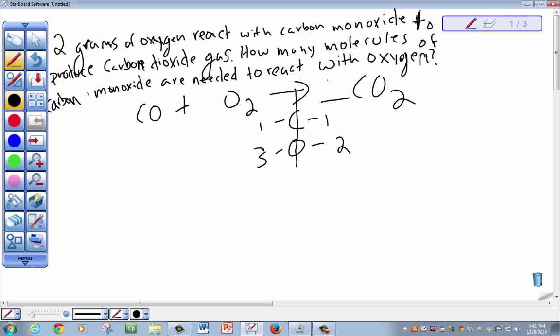To balance this equation, we put a 2 on the carbon dioxide side and it rearranges the carbons to 2 and the oxygens to 4. To balance it on the reactant side, we put a 2 on the carbon monoxide and it changes the carbon to 2 and the oxygens to 4. Now we have a balanced equation.